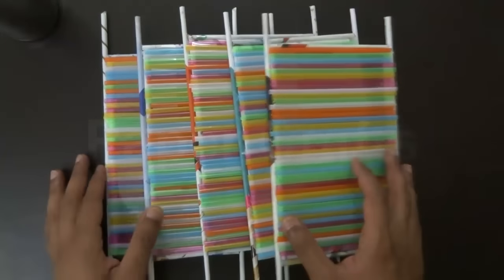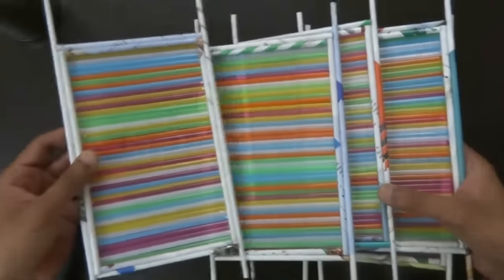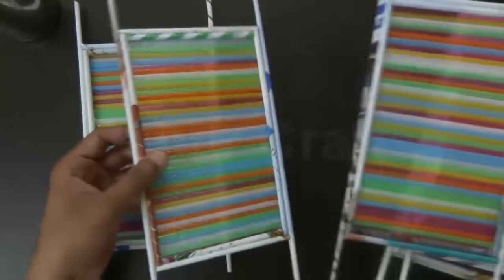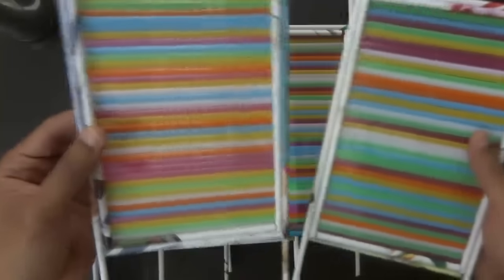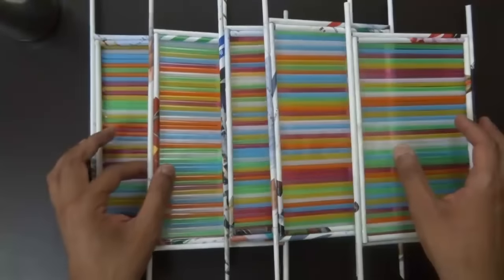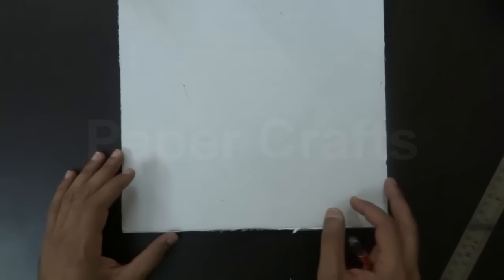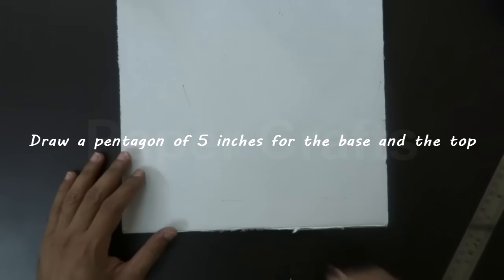I have already made 5 such pieces having the same dimensions with random designs on each piece. Now to form the base and the top of the lampshade we need a cardboard sheet and we will trace out a pentagon of 5 inches on this cardboard.